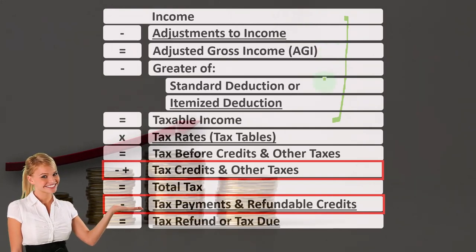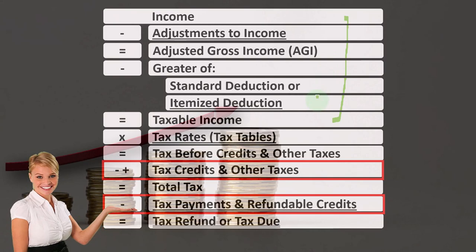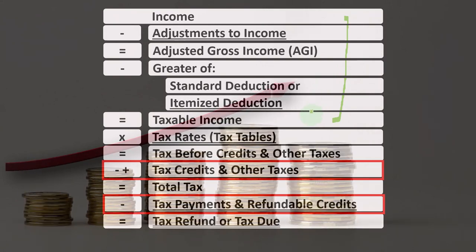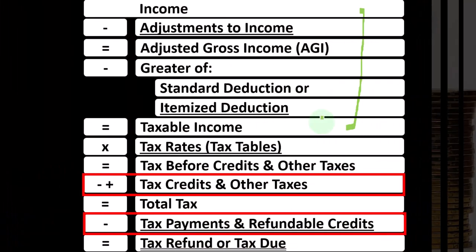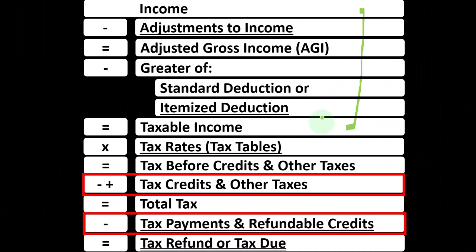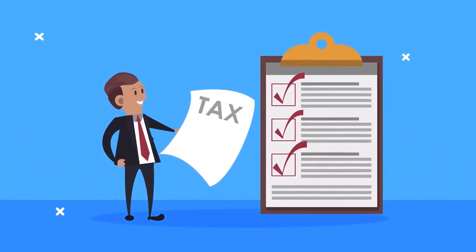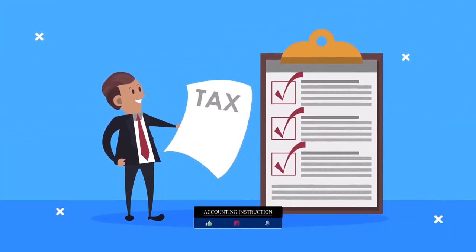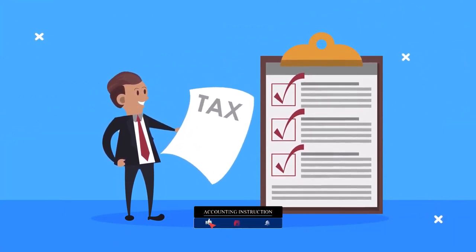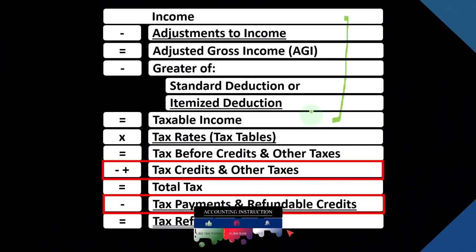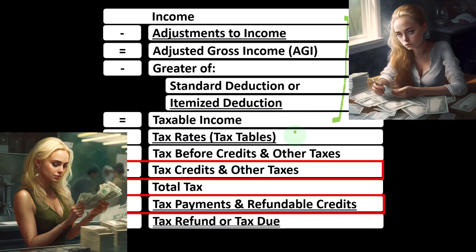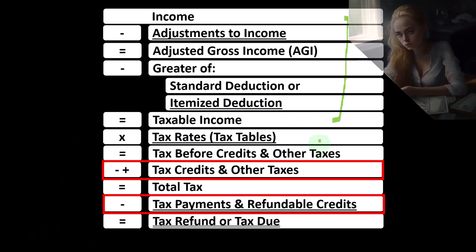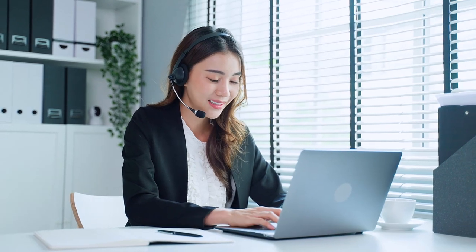We subtract out the greater of the standard or itemized deduction to get to taxable income, which is similar to net income of a normal income statement. Unlike a normal income statement where we want net income as high as possible, we want taxable income as low as possible, because we apply the progressive tax system — often using software — to get to the tax before credits and other payments.